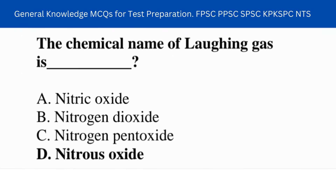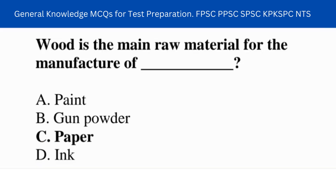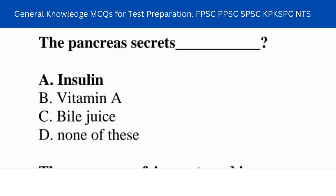Next question: the chemical name of laughing gas is nitrous oxide. Next question: what is the main raw material for the manufacture of paper? The pancreas secretes insulin.